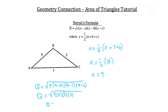So Q is equal to the square root of all those multiplied together, which gives us 216. And when we take the square root of 216, we find that Q, the area of triangle ABC, has a value of roughly 14.7 units squared.